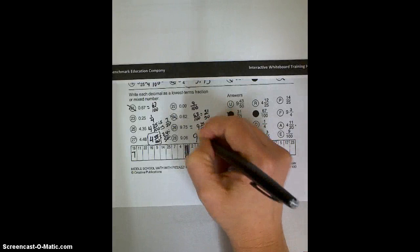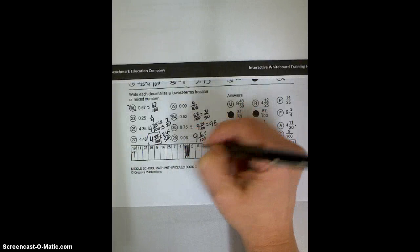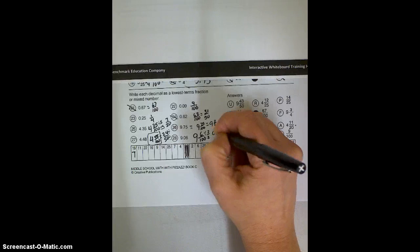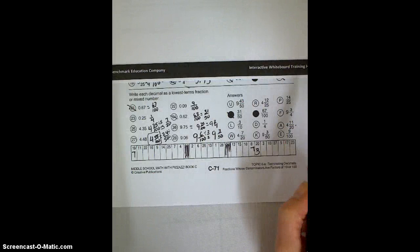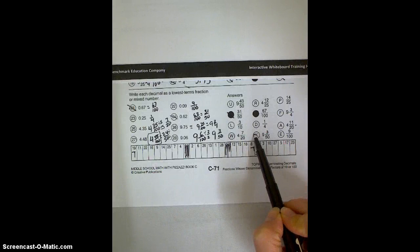And again, this is a fine answer. If you're looking for it on the puzzle, you'll need to reduce it. Divide them both by 2 over 2, and you would get 9 and 3 fiftieths. Let's see if we can find 9 and 3 fiftieths. That's kind of a funny number. There it is. So 28 would be a K.